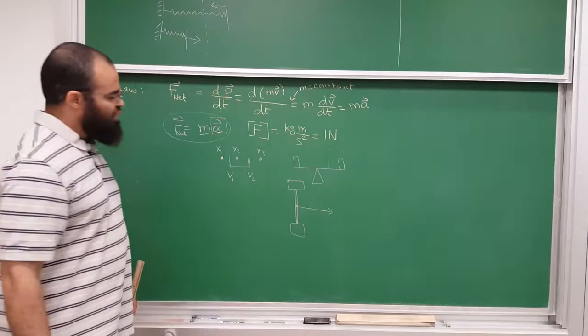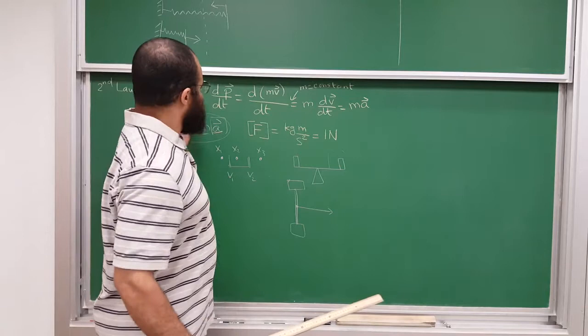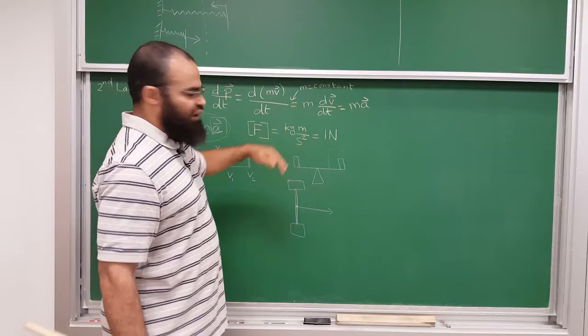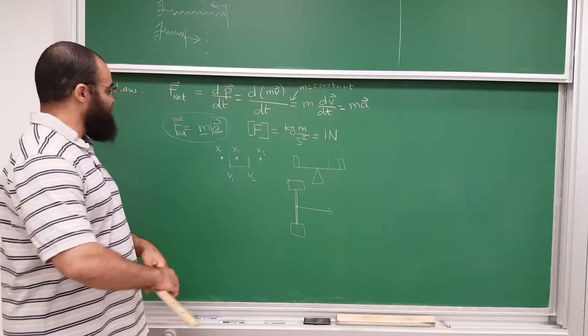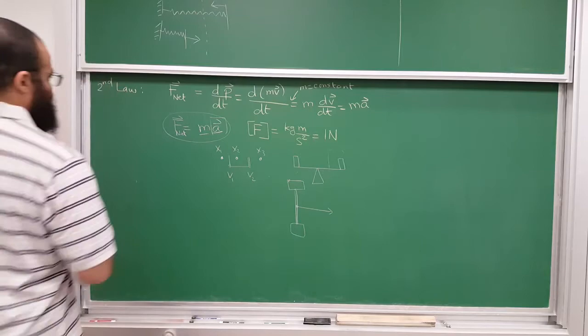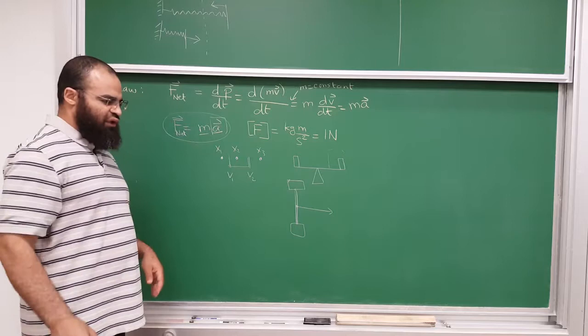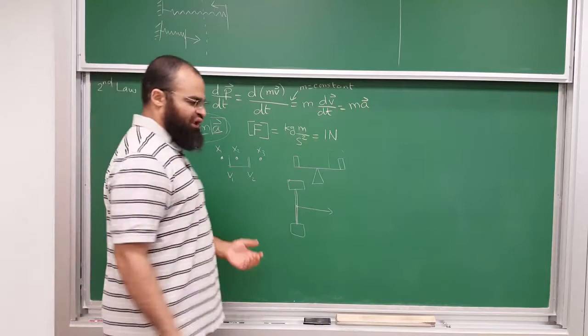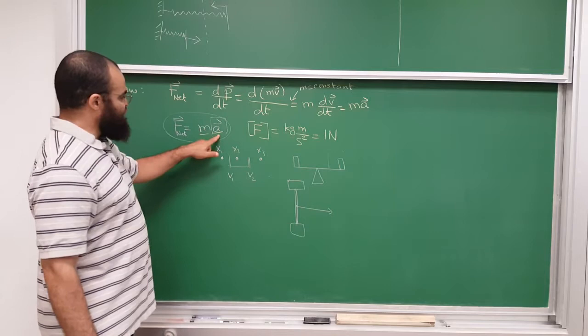Why am I mentioning this? Because I want to remind you that physics, even though it looks very mathematical and theoretical, is an experimental-based science. You have to be able to measure things. So if you have a way to measure mass and acceleration, then you have a way to measure force — you apply a force to a known mass, and you see how much acceleration that force causes.